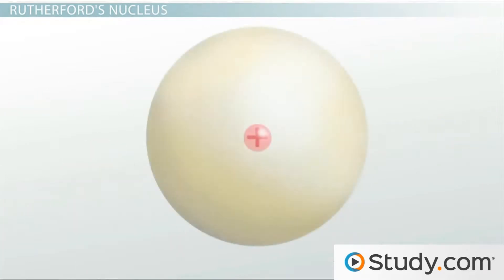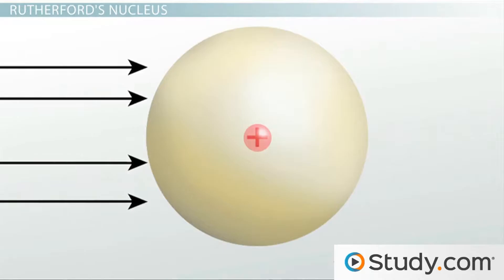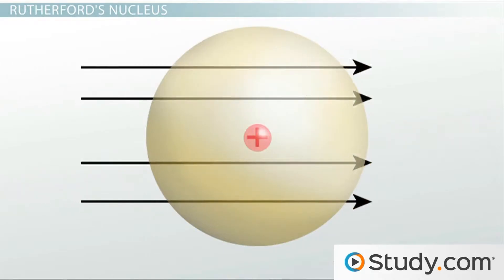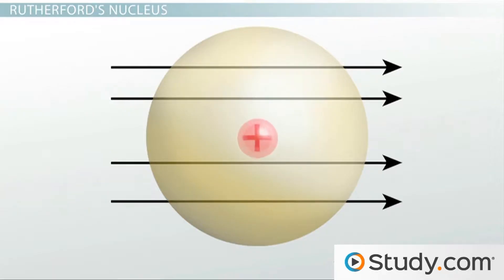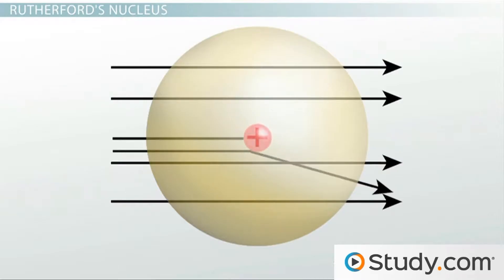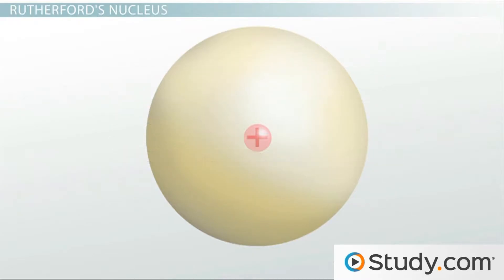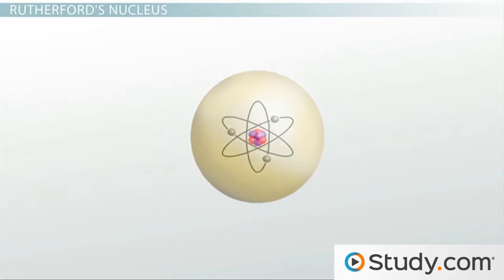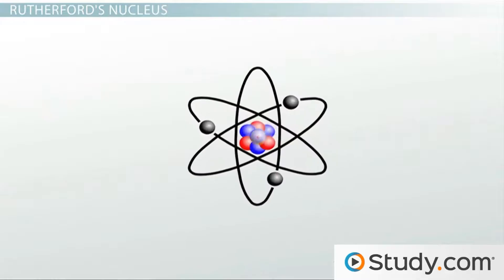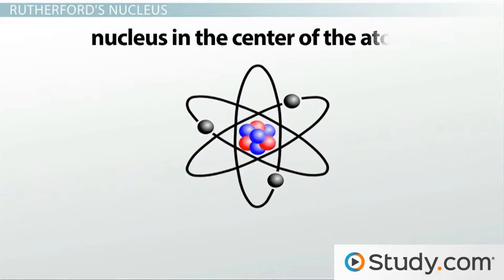After this experiment, Rutherford concluded that these alpha particles must have hit something very small, dense, and positively charged in order for them to come straight back. Rutherford claimed that this also shows that the atom consists of mostly empty space and that all of the positive charges are not evenly spread throughout the atom, but instead squished into a teeny tiny nucleus in the center of the atom.